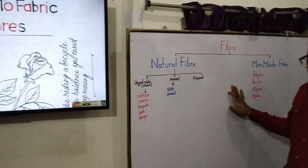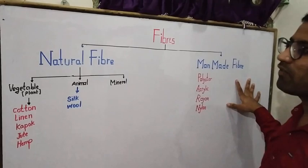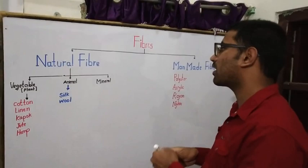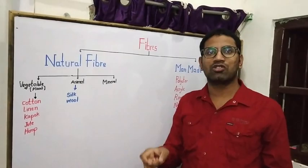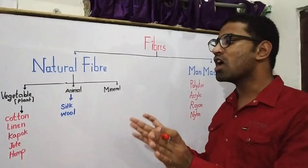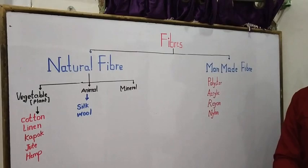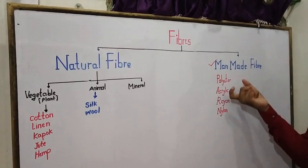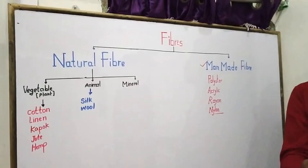Now we are going to start our chapter. We are going to classify fiber into two types. First: Natural Fiber. Second: Man-made Fiber. Natural Fiber is obtained from nature — from plant sources or animal sources. Man-made fiber is prepared by chemical process in the industry; it is called synthetic fiber — examples are polyester, acrylic, rayon, and nylon.